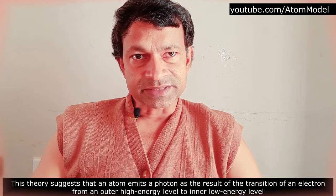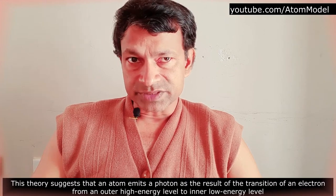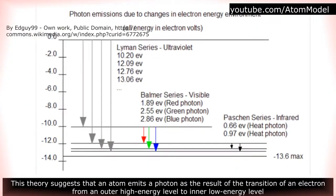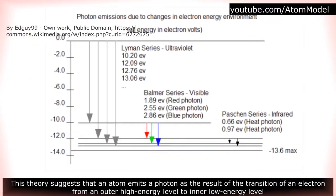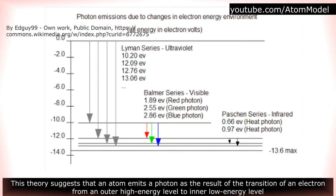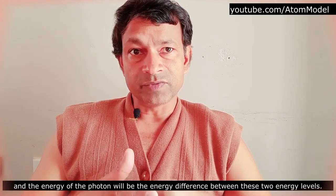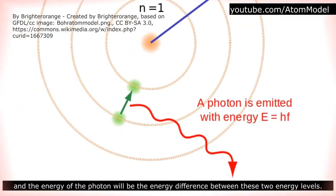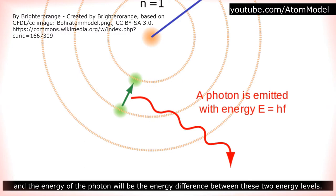This theory suggests that an atom emits a photon as the result of the transition of the electron from an outer high energy level to an inner low energy level, and the energy of the photon will be the energy difference between these two energy levels.